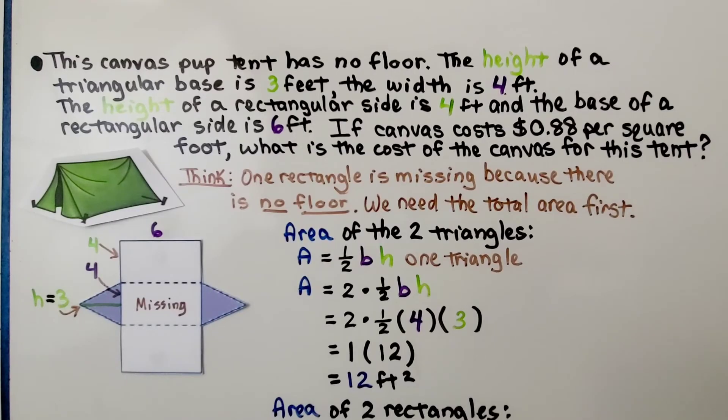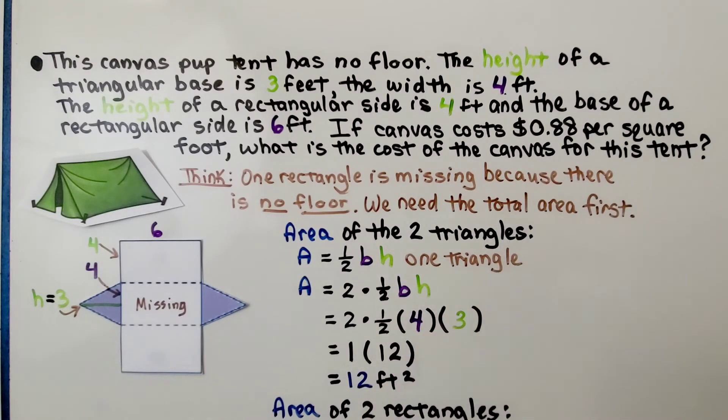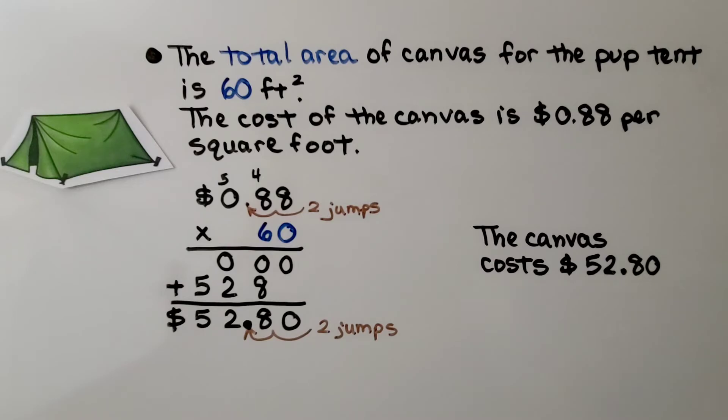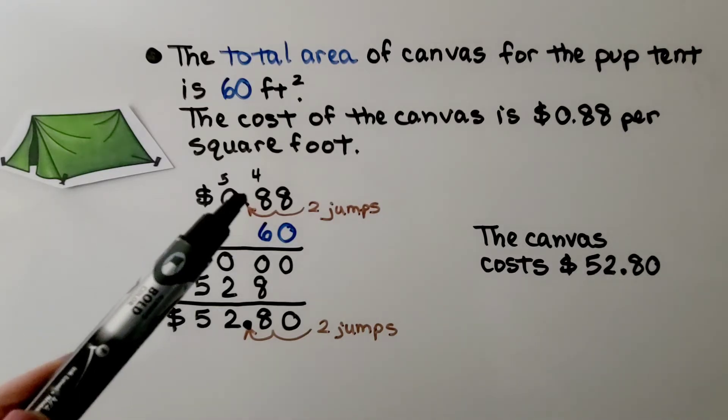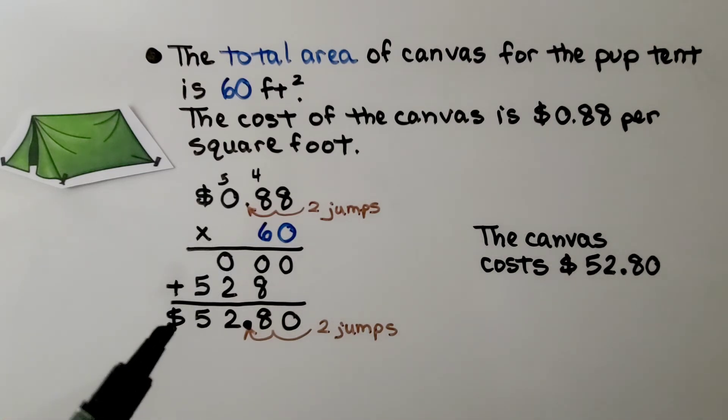But we need to find the cost of the canvas at 88 cents per square foot. We found the total area of canvas for the pup tent was 60 feet squared, and we know the cost of the canvas is 88 cents per square foot. We multiply the 88 cents by the 60 feet squared, and we get $52.80. We know that the canvas for this tent costs $52.80.